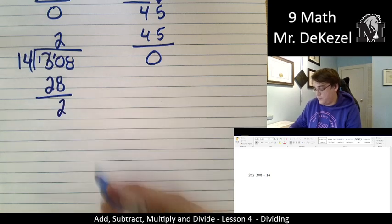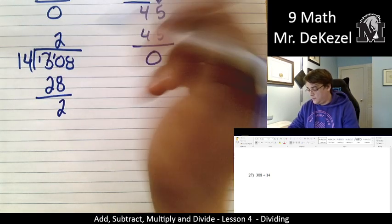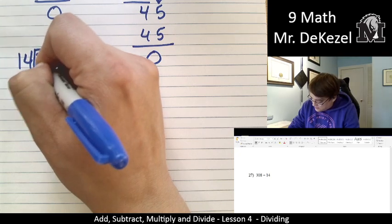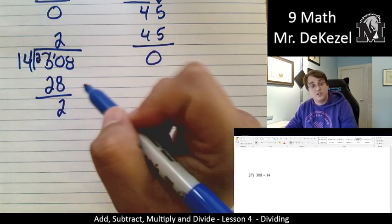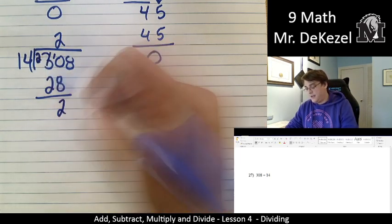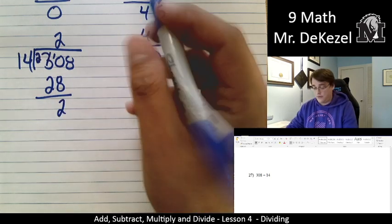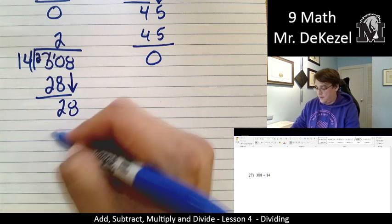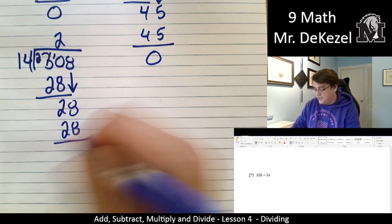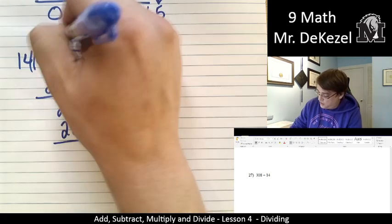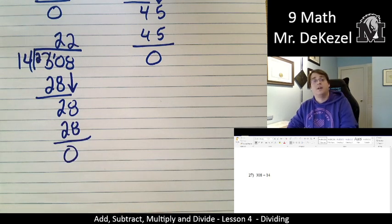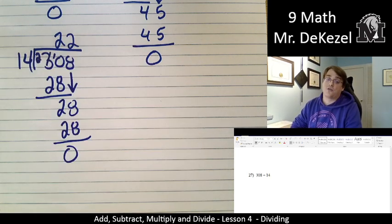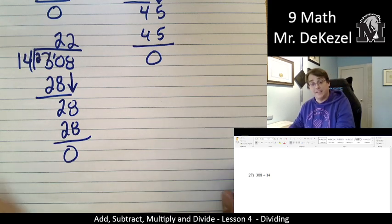10 minus 8 is 2. And I wrote a 1 instead of a 2, that's why I was confused. 3 minus 1 is 2, not 1. So 2 minus 2 is zero. We can just leave that. We're going to draw down our 8. And again, 14 goes into 28 twice. It's nice and even this time. So two times, and we get a zero. So that means 308 divided by 14 is 22. That would be our final answer.